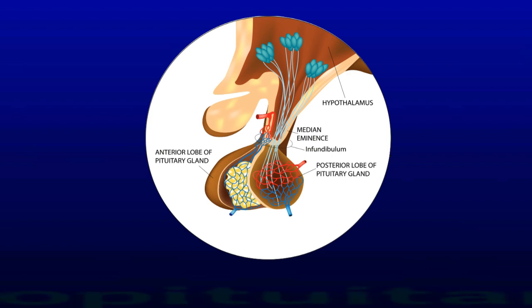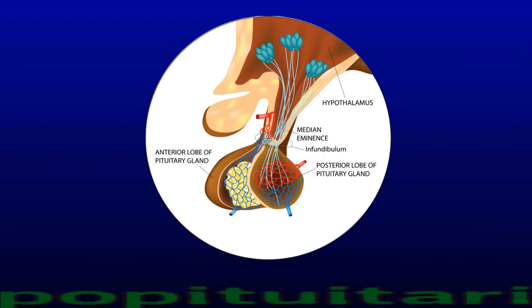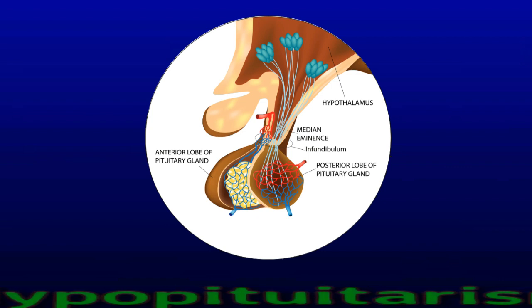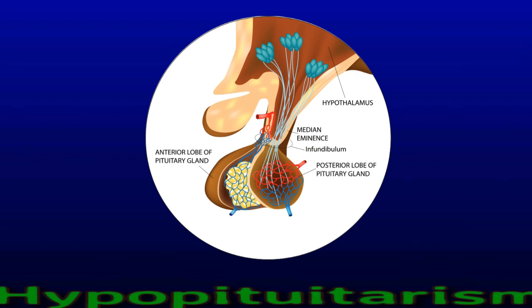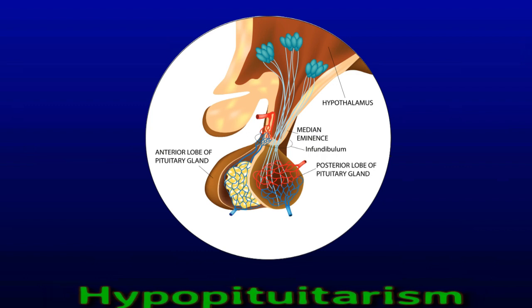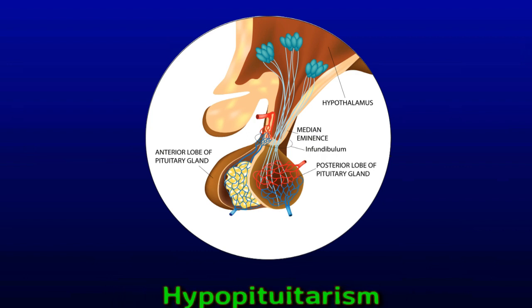Hypopituitarism is a rare disorder that occurs when the pituitary gland does not produce enough of certain hormones. Causes of hypopituitarism include pituitary tumor, radiation therapy or surgery affecting the pituitary gland, bleeding of a pituitary tumor, head injury, infections such as tuberculosis or meningitis, inflammation of the pituitary gland, severe blood loss during childbirth, conditions that may affect the pituitary gland such as hemochromatosis or lymphoma, and certain conditions present from birth.